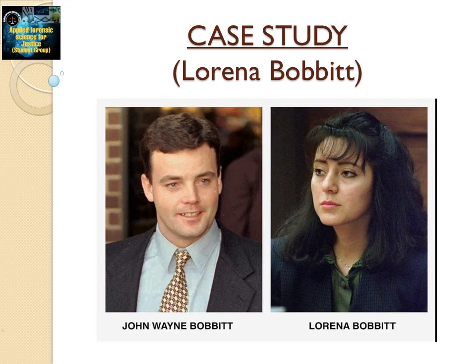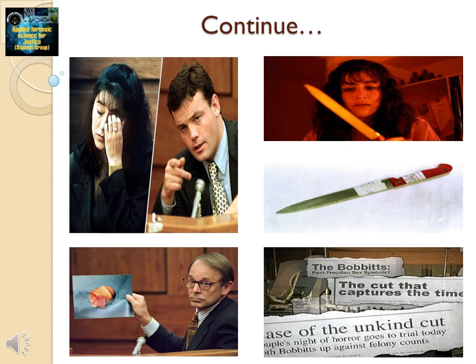Case Study: Lorena Bobbitt. Lorena Bobbitt argued she was temporarily insane when she cut off her husband's penis with a kitchen knife. After being raped by her husband, Lorena went into the kitchen where she noticed a carving knife on the counter. Memories of past domestic abuse raced through her head. Lorena entered the bedroom where John was asleep, then proceeded to cut off more than half of his penis. She then left the apartment, and after driving a short while, she rolled down the car window and threw the severed body part into a field.